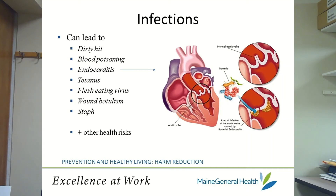Wound botulism occurs when bacteria enters the body and produces a toxin. It has also been linked to black tar heroin. Symptoms of wound botulism include paralyzing muscles, droopy eyelids, blurred vision, and sore throat. Early treatment is essential so that muscles that control breathing don't fail.